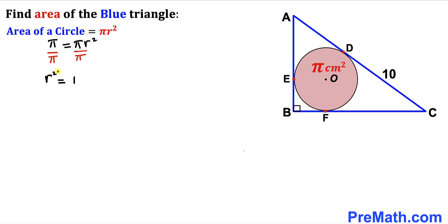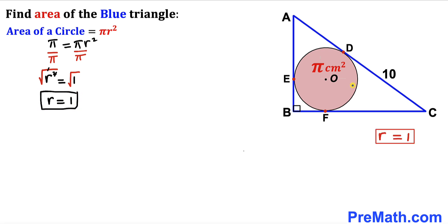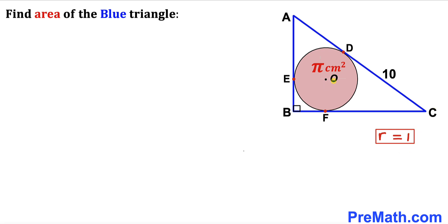Taking the square root of both sides, the square and square root cancel, so our radius r turns out to be positive 1 centimeter. Thus the radius of this pink circle is 1 centimeter.